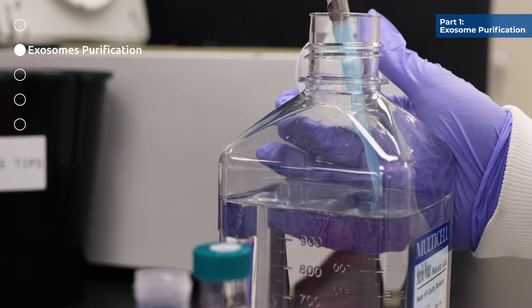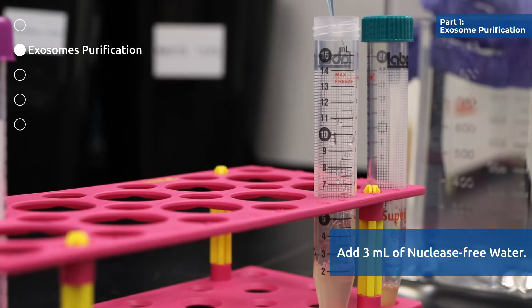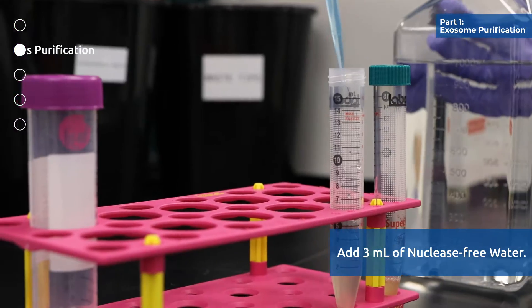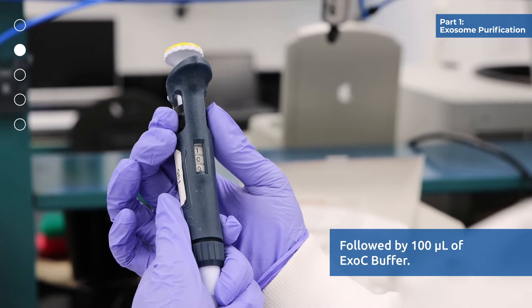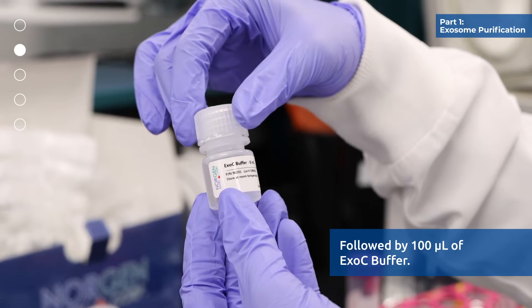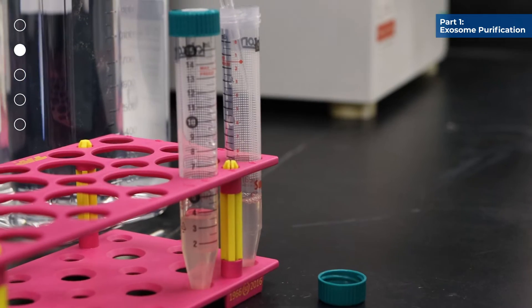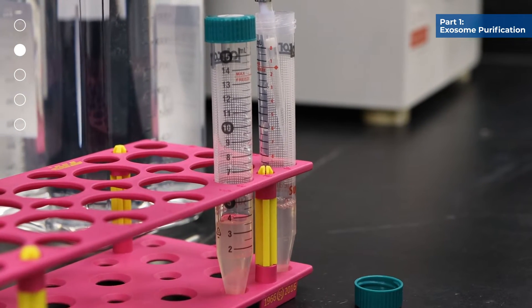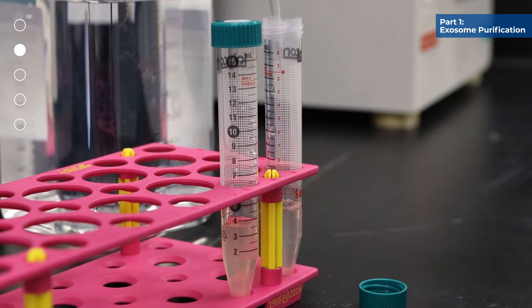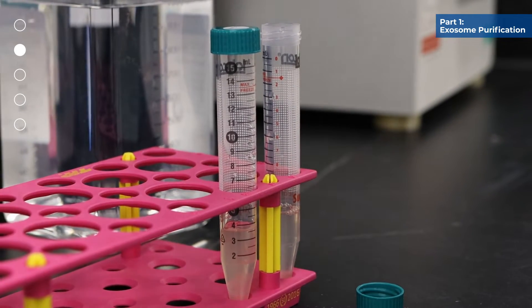To 1 ml plasma serum, add 3 ml of nuclease-free water, followed by the addition of 100 microliters of exo C buffer. Note that the final volume of any plasma serum sample to be processed should be 4 ml before the addition of the specified 100 microliters of exo C buffer.